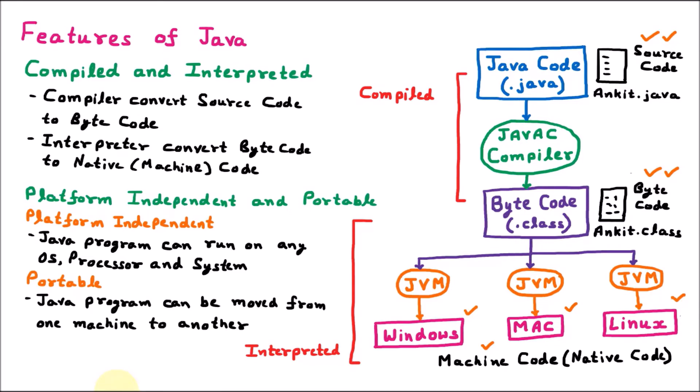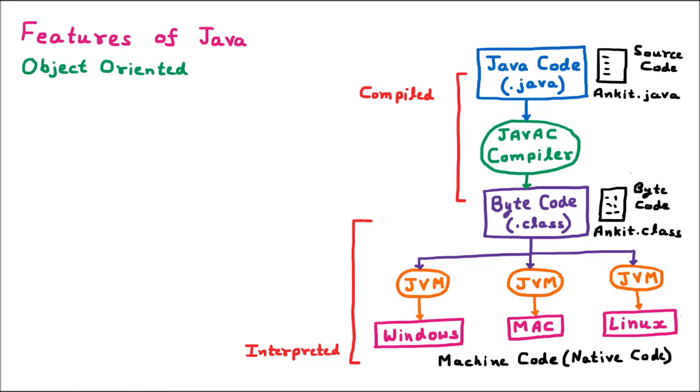The next feature of Java is that it is an object-oriented language. Object-oriented language has four features. The first feature is abstraction — hiding the unnecessary data from the user. For example, on Instagram, when you post an image with 1 million likes, the user is not aware of where those likes are stored or which variable is being used. The user only sees the image and the likes. That's abstraction — hiding unnecessary details from the user.